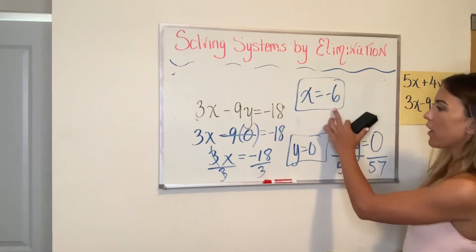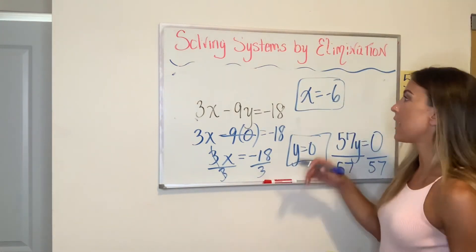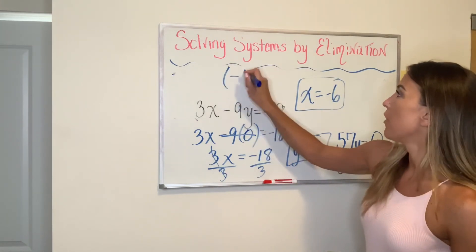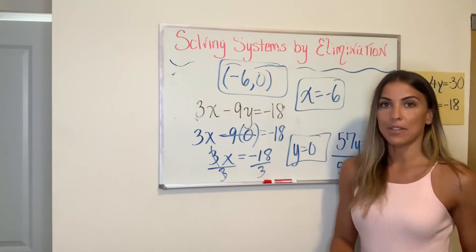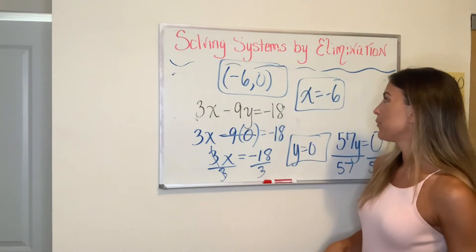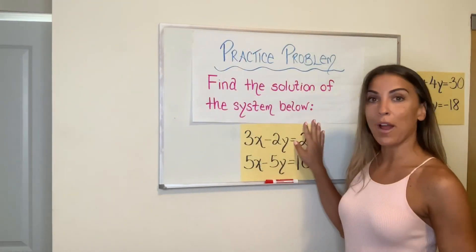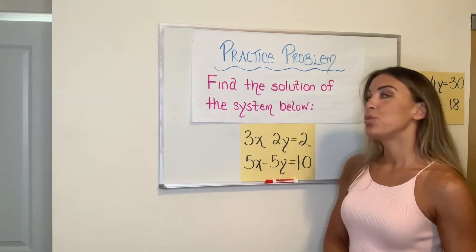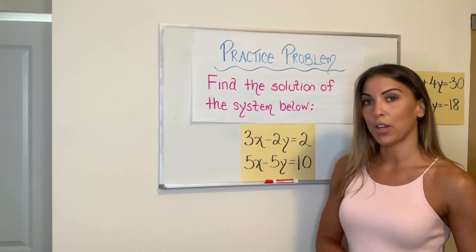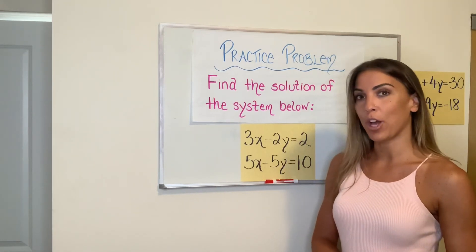So there's my X value. There's my Y value, which means that if this system was graphed, the two lines would intersect at the point negative six zero. Here's your practice problem. The answer will be in the description of the video. If you did not get the correct answer and you're struggling to find your mistake, please reach out. I will try to help you find your mistake.